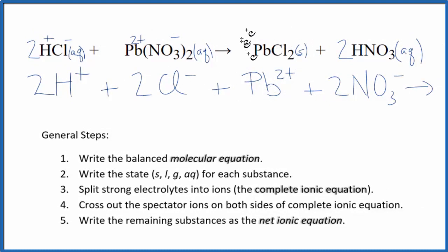For the products, when we have a solid in a net ionic equation, we're not going to split that apart. So this will be PbCl₂ plus 2 hydrogen ions, H+, plus 2 of the nitrate ions, NO₃-. And this is our complete ionic equation.